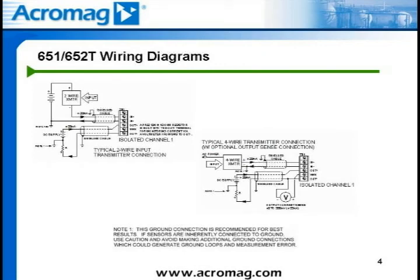Here we show electrical hookups based on DC current applications. First, we have a two-wire transmitter field device, which involves the use of a DC power supply to power both the field transmitter and the input loop. Going around the loop starting with the positive terminal of the two-wire transmitter, wired to the positive side of the DC power supply. From the negative side of the power supply, wired to the N-minus terminal of the 651T or 652T transmitter. The negative connection on the two-wire transmitter ties in with the N-plus terminal on the 651T or 652T module.